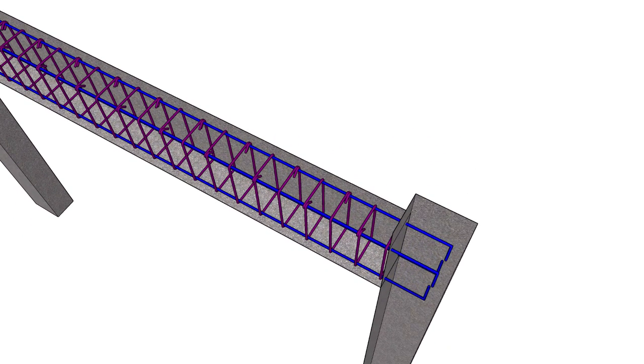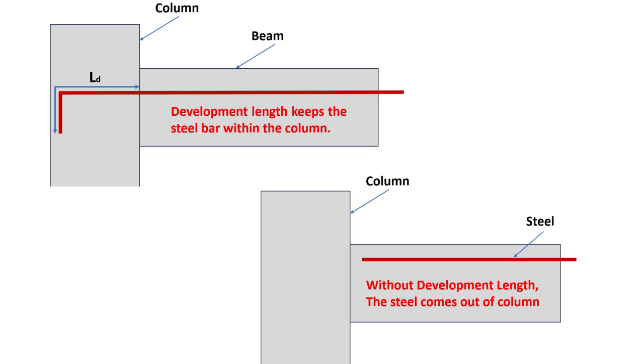Now why is this so important? The development length prevents the rebar from pulling out prematurely or failing in tension before the concrete reaches its full strength. If the development length falls short, it can lead to a reduction in the load carrying capacity and compromise the structural integrity of the concrete element. And nobody wants that.